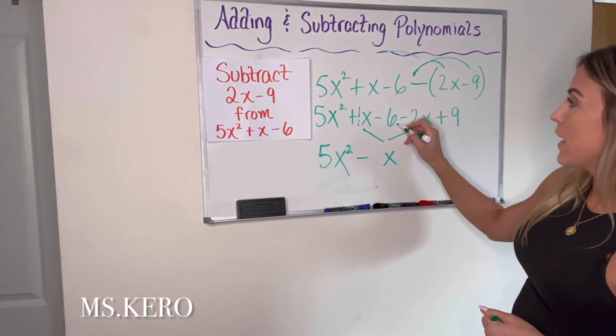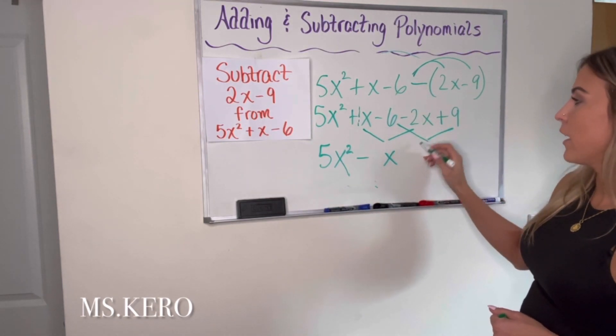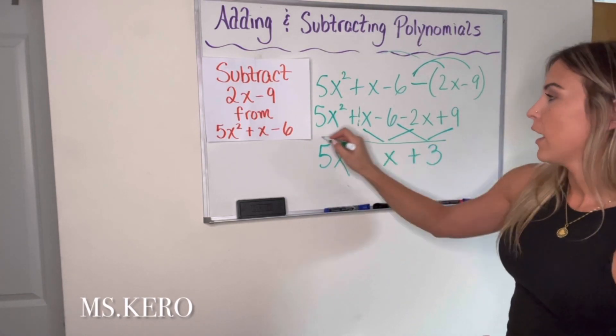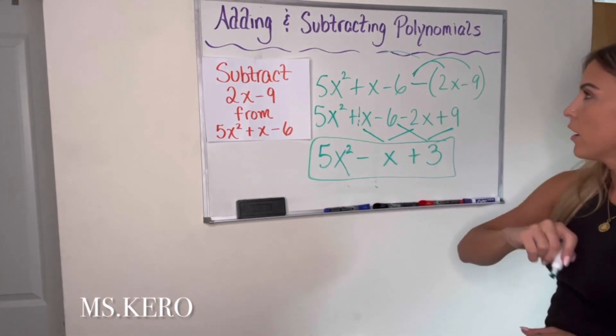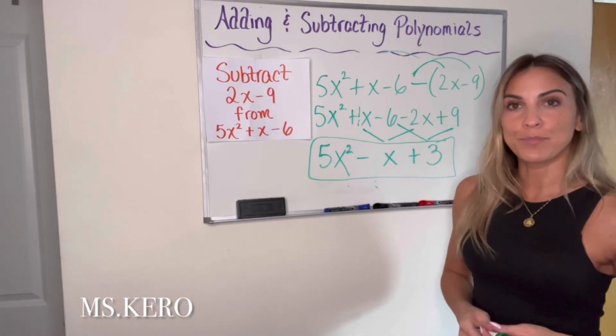And then I have negative 6 plus 9, which is going to give me a positive 3. And this expression right here is the answer to the subtraction problem above.